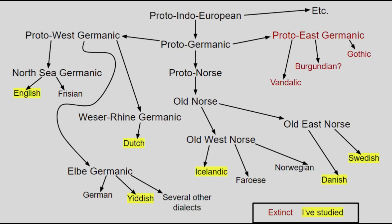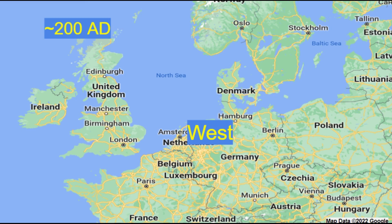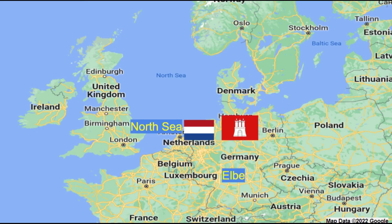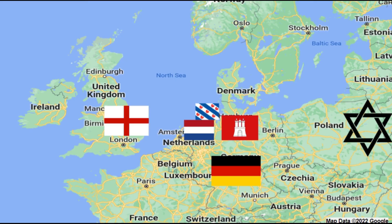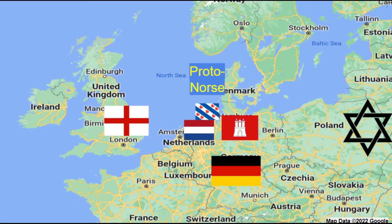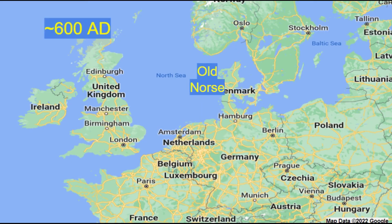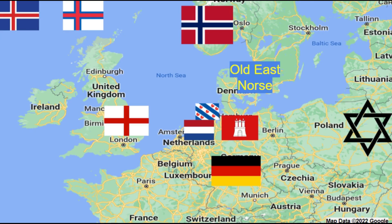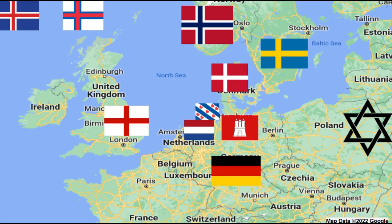Back to living Germanic languages: Proto-West Germanic was spoken to about 200 AD, around which it split into Weserain Germanic (Dutch and Low German dialects), Elba Germanic (the High German dialects, including Standard German and Yiddish), and North Sea Germanic (English and Frisian). Meanwhile, the North Germanic languages became Proto-Norse and then Old Norse, the language of the Vikings, by about 600 AD. Old Norse then split into Old West Norse — giving Icelandic, Faroese, and Norwegian dialects — and Old East Norse, which evolved into Danish and Swedish.